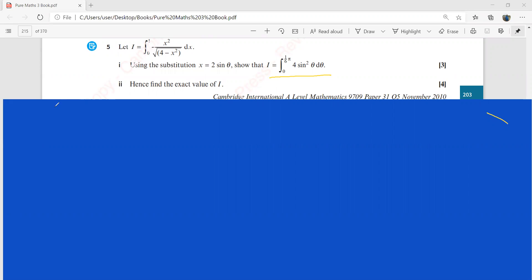We have x equal to 2 sine theta, so your x squared will be 4 sine squared theta.